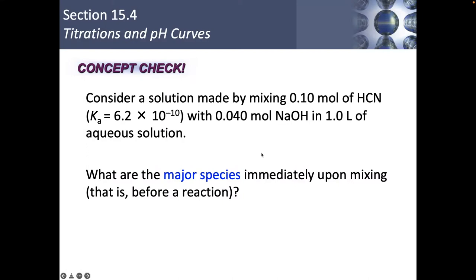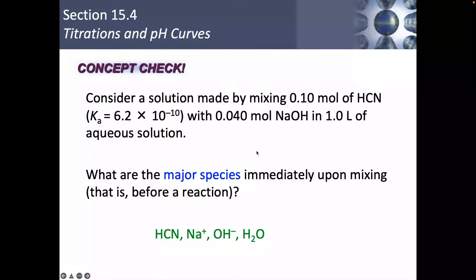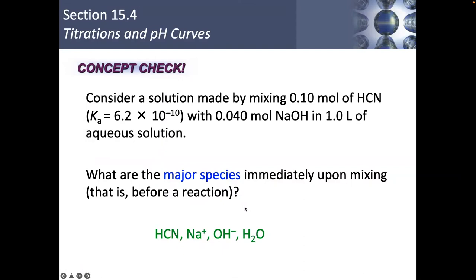What are the major species immediately upon mixing? Before the reaction starts, what are we going to have mostly? Hopefully we can identify these as being our primary major species.